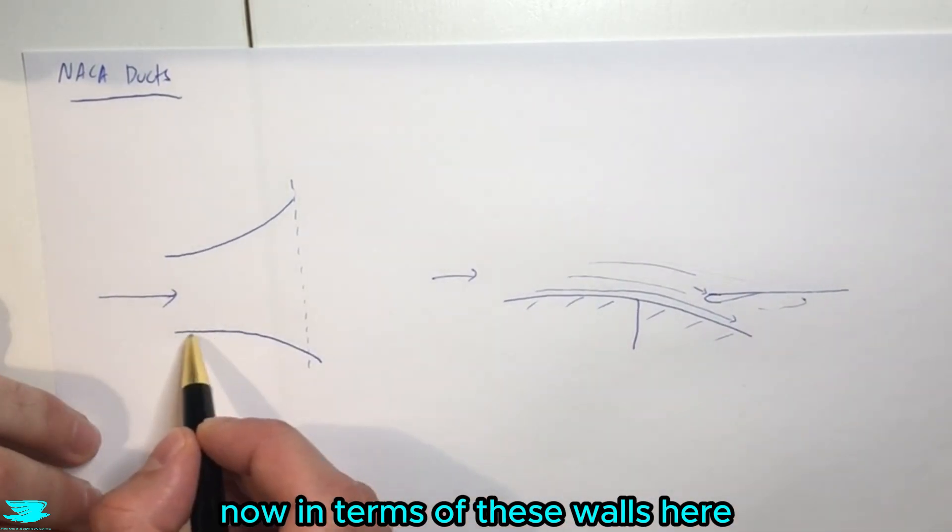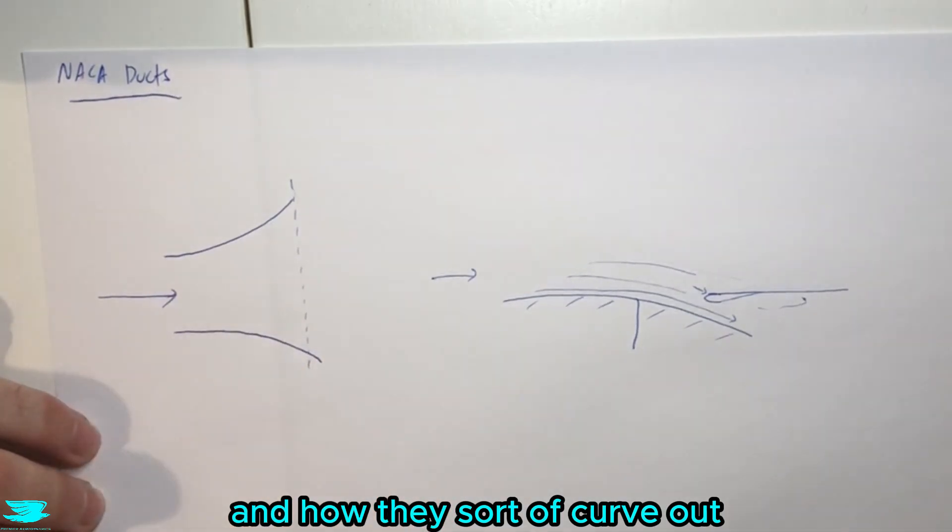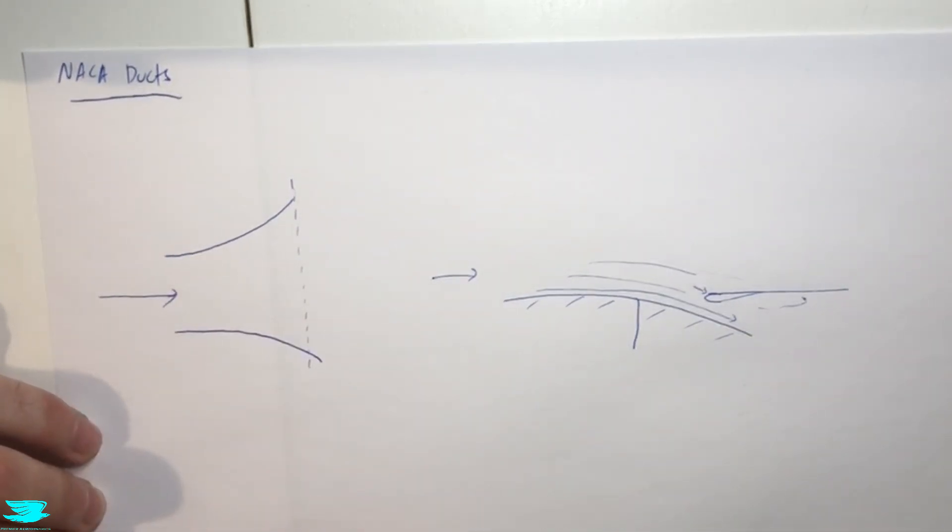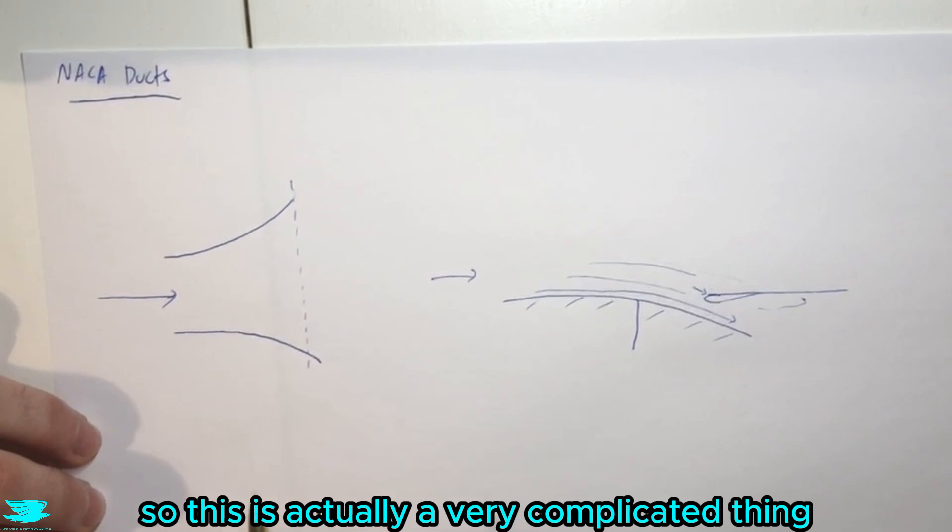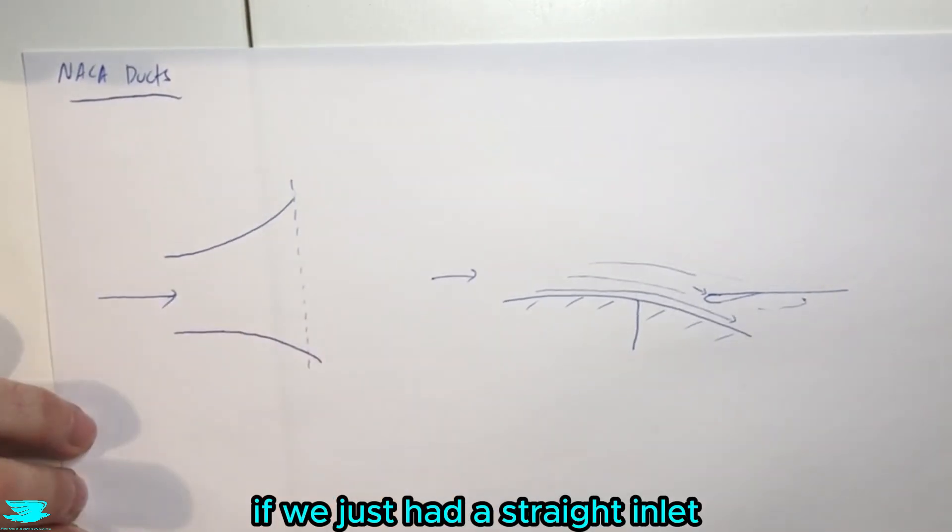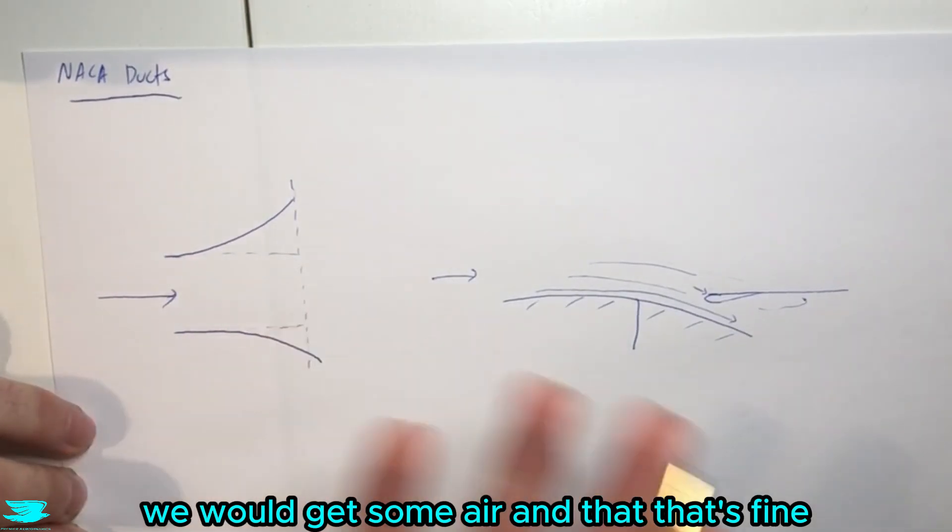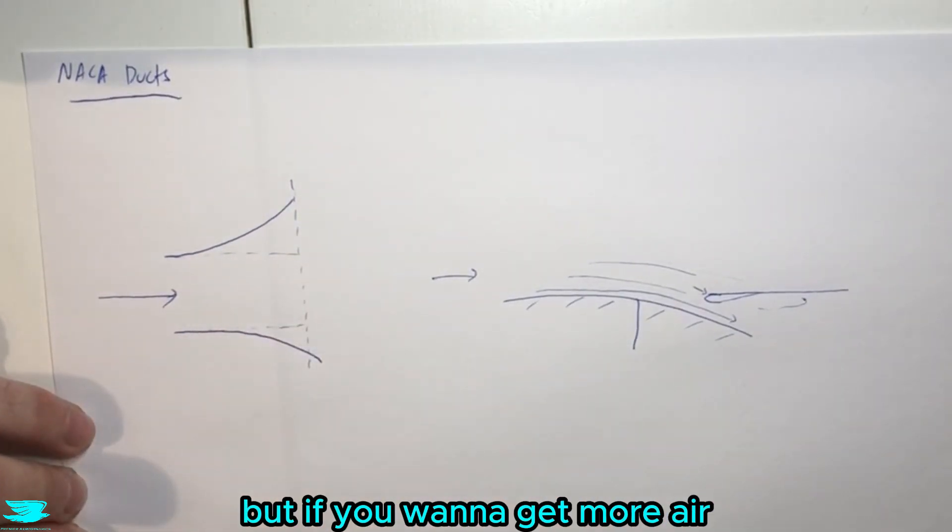Now in terms of these walls here, and how they sort of curve out, why do they do this? So this is actually a very complicated thing. First of all, we have the flow coming along here. And generally speaking, if we just had a straight inlet, so these walls went straight like this, we would get some air in it, that's fine. But if you want to get more air, you can curve these walls.